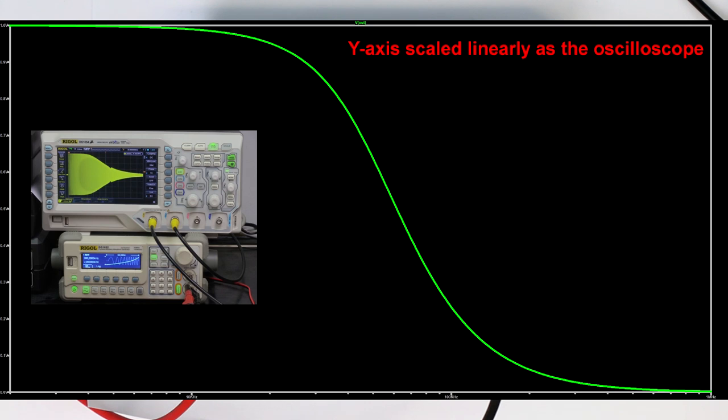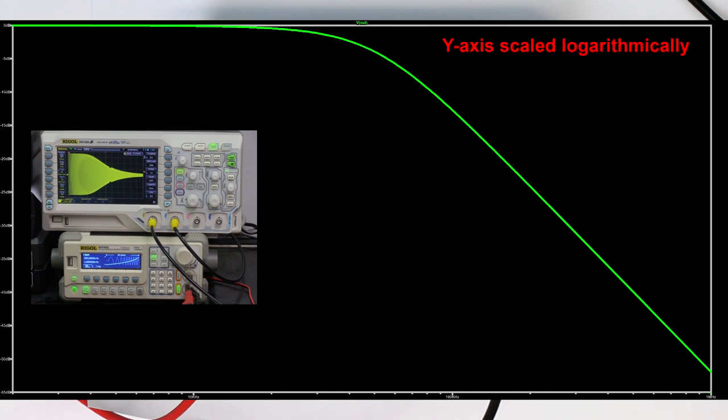And as you can see, the roll-off is much steeper. It has double the roll-off rate, or 12 dB per octave, or 40 dB per decade.